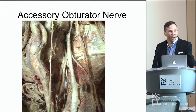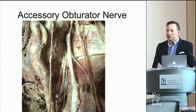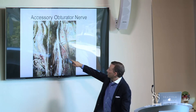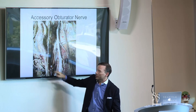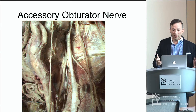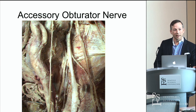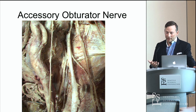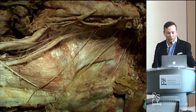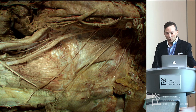A nerve many people forget about, seen only in about 10% to 30% of the population, is the accessory obturator nerve. It's a small branch usually just lateral to the main obturator nerve. It can supply the hip joint or a little skin, but most of the time it just supplies the pectineus muscle — which, if it wasn't working in us, we might not know the difference.